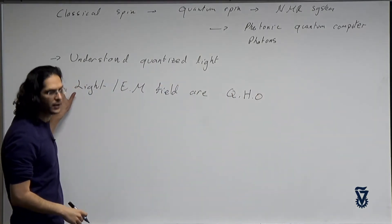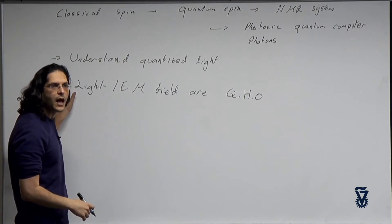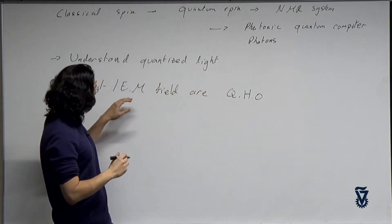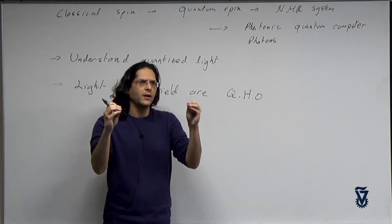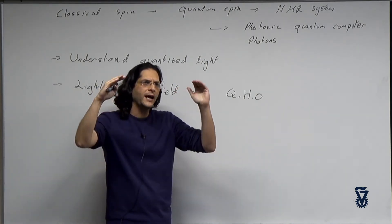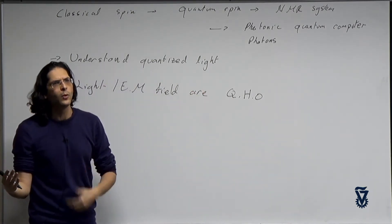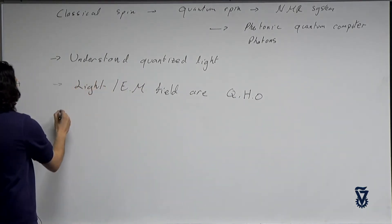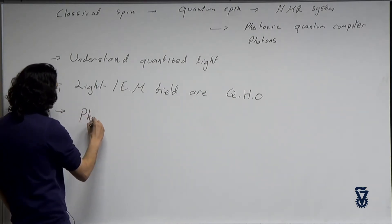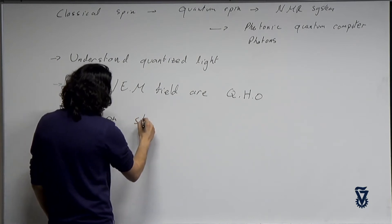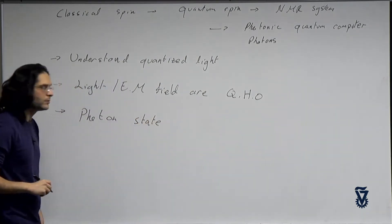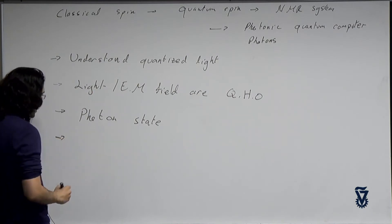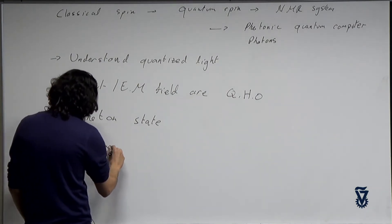I will try to qualitatively explain how from Maxwell's equations we get the fact that electromagnetic fields are just quantized harmonic oscillators. It will be pretty high level — I will explain the ideas and reference you to where you can find the details, but we will not do the full derivation. After we understand this, we will have a concept of what is a photon state, what is a single photon, and what is a coherent state.